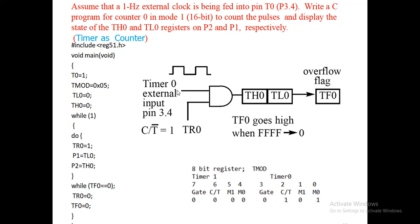Suppose you are designing a system for an automatic car parking area. Whenever the proximity sensor detects a car passing, the value in the register will increment. Here, I am using a 1 Hz external clock fed to the physical pin P3.4. When the C/T bar bit is set to 1, it performs the counter operation — counting external events. Once it reaches 0xFFFF, the overflow flag goes to 1.